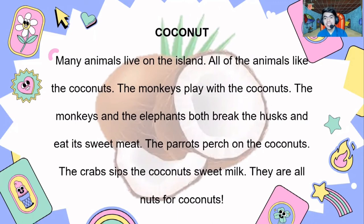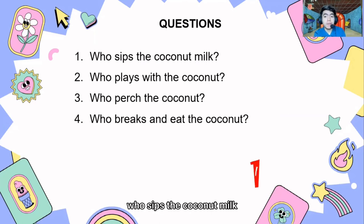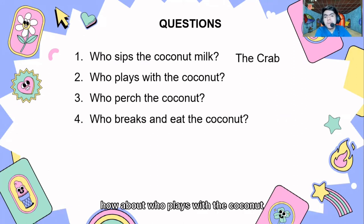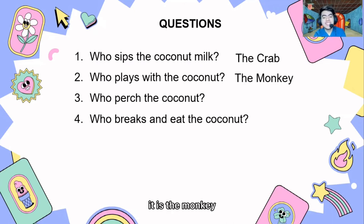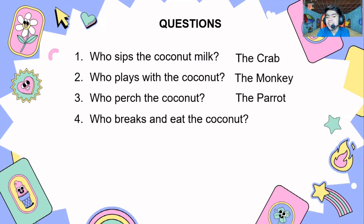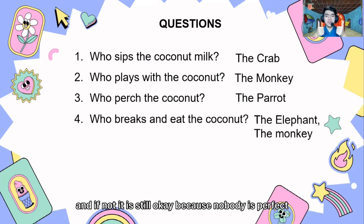I guess you are now ready with the questions. Who sips the coconut milk? You are right — the crab. Who plays with the coconut? It is the monkey. Who perches on the coconut? You are right — it is the parrot. Who breaks and eats the coconut? It is the elephant and the monkey. I hope you were able to get all four questions. And if not, it is still okay because nobody is perfect.